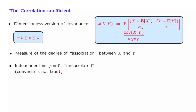Let us now look at the other extreme, where the two random variables are as dependent as they can be. Let's look at the correlation coefficient of one random variable with itself. The covariance of a random variable with itself is just the variance of that random variable. Since sigma x equals sigma y, we are dividing by sigma x squared, which is the variance, and we obtain a value of 1. So a correlation coefficient of 1 shows up in such a case of extreme dependence. If instead we had taken the correlation coefficient of x with the negative of x, we would have obtained a correlation coefficient of minus 1.